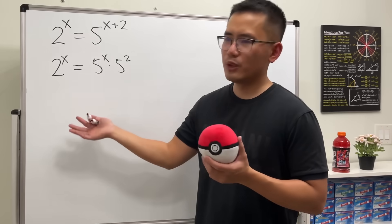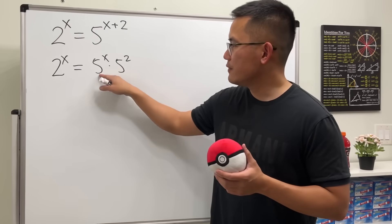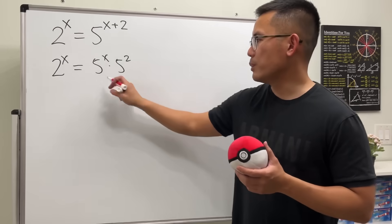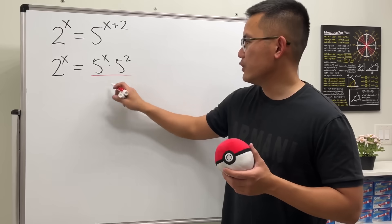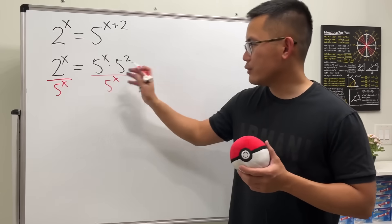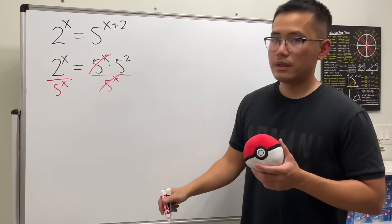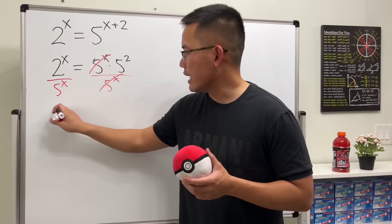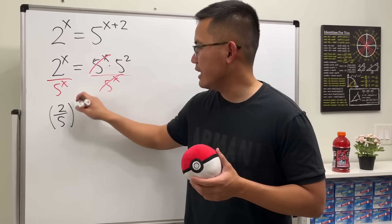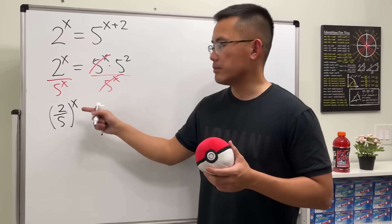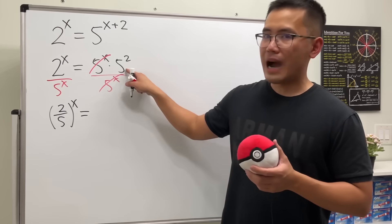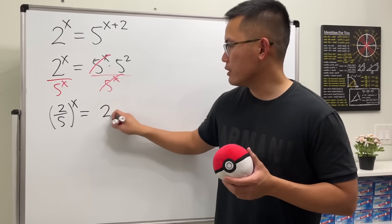Depending on how you want to do it, you can divide the 5 to the x on both sides. It will be easier if we divide both sides by 5 to the x. This way, we will get parentheses with 2 over 5 inside and then x on the outside, because they are both with x. And that will be equal to 5 to the second power, which is 25.